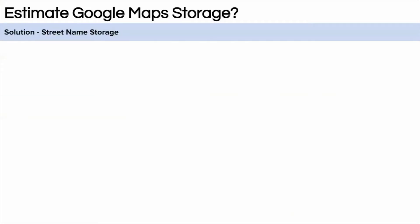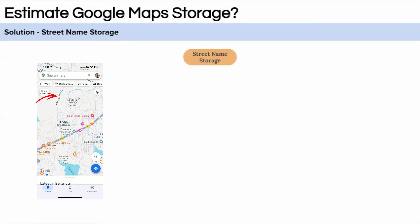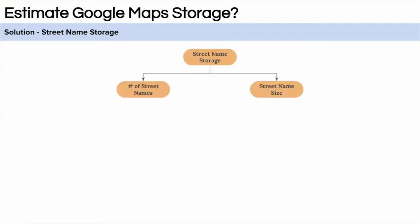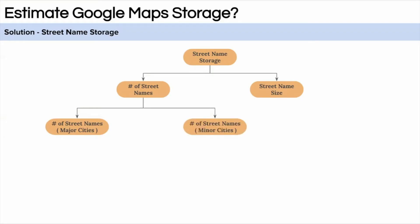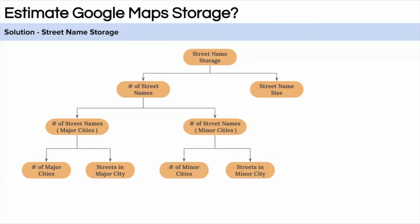Let's go deeper into street name storage. Storage for street names equals the total number of streets multiplied by the size of one street name. The total number of streets equals streets in major cities plus streets in minor cities. Since villages have fewer streets and many are not tagged on Google Maps, we'll ignore villages. Streets in major cities equals total major cities multiplied by average streets per major city, and similarly for minor cities.